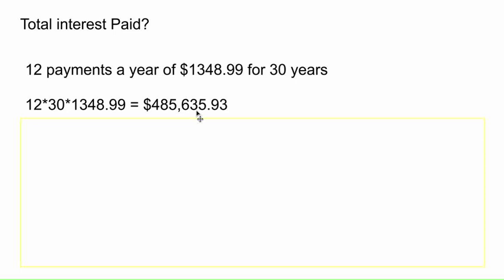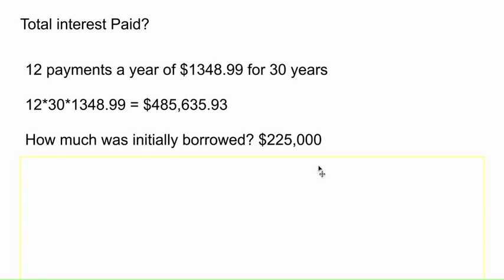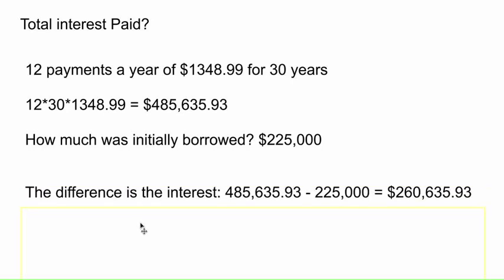Some of that money the bank originally gave us — we borrowed from them and then pay back a lot more. The question is: how much more do we pay? What's the difference between the amount paid and the amount borrowed initially? We borrowed $225,000, so all we've got to do to find the interest is subtract those two values. You pay $260,635.93 in interest — more than you even initially borrowed. But over 30 years, your house value hopefully goes up, and the value of this money is a bit less due to inflation. It really depends on the interest rate and other factors, but keep in mind it's often more than you initially borrowed.